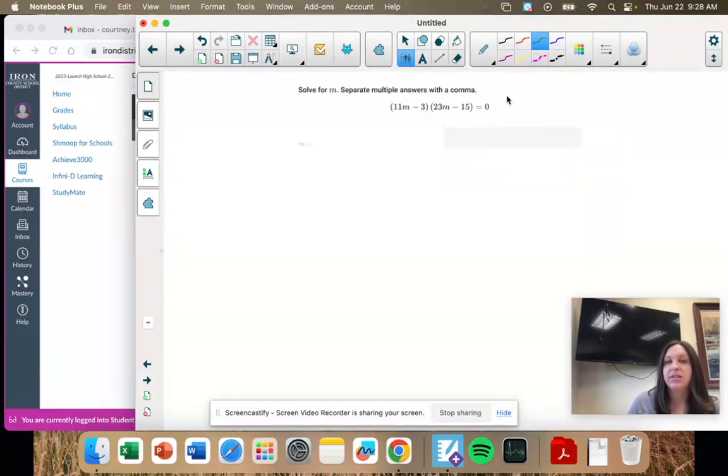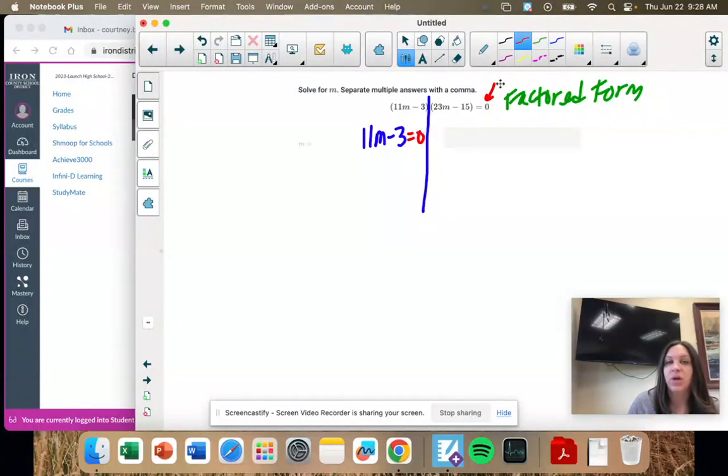So again, this is what we call factored form. We have the first factor is 11m minus 3, and the second factor is 23m minus 15. So when you're in factored form, you always want it equal zero. That's really important because we can set each factor equal to zero. We have to have it equal zero. If it's not equal zero, we're going to have to multiply it out and solve. But this one's equal zero, so we're good.